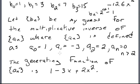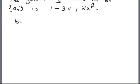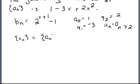Let b sub n be my guess for the multiplicative inverse of a sub n, where a sub n is defined as: a0 equals 1, a1 equals negative 3, a2 equals 2, and a sub n equals 0 for n greater than 2. The generating function of this sequence a sub n is just 1 minus 3x plus 2x squared. Now we're going to go and multiply these out. We'll let c sub n equal a sub n times b sub n, and b sub n equals 2 to the n plus 1 minus 1.